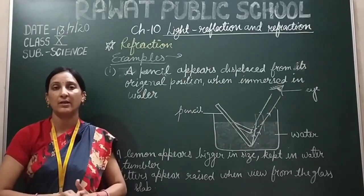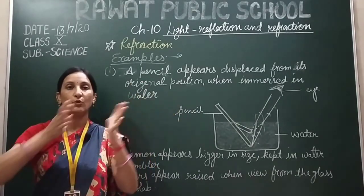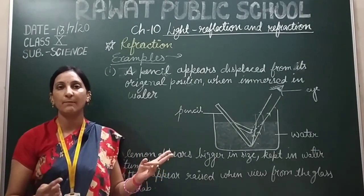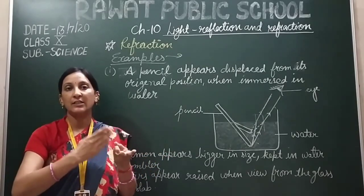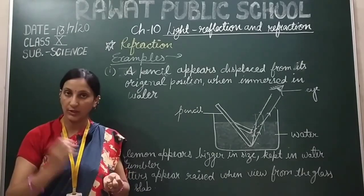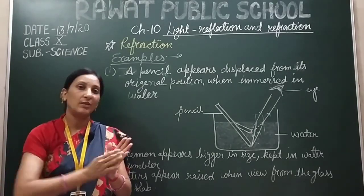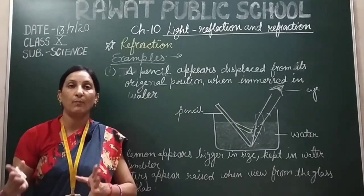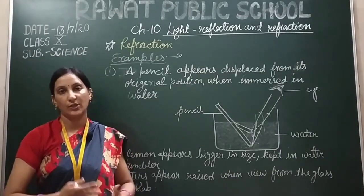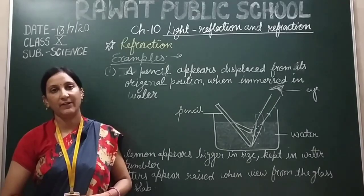We also know the direction from which the light is starting: from rarer medium to denser medium, or denser medium to rarer medium — we have those two rules. If the light is travelling from rarer medium to denser medium, it bends towards the normal. If it is travelling from denser medium to rarer medium, it bends away from the normal. That's all for the day. Thank you and have a nice day.